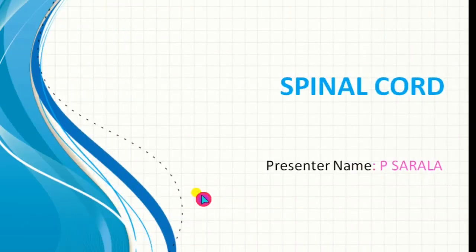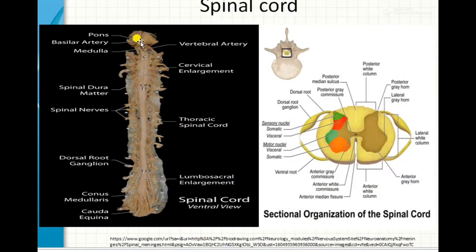Welcome to another class on the central nervous system. Today we are going to learn about the spinal cord, which is the second part of the CNS. The brain is the first part, and the continuation of the brain is the spinal cord. The medulla oblongata continues as the spinal cord — this is the caudal region of the hindbrain.